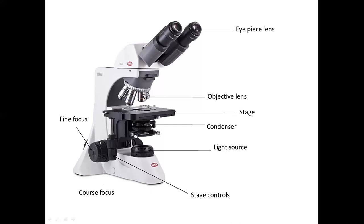Then you have the fine and coarse focus knobs. The fine one moves the stage very little, while the coarse one moves it a lot. When focusing on low power — either 4x or 10x — you can use the coarse focus. But when using high power like 40x, 60x, or 100x, you must use the fine focus.